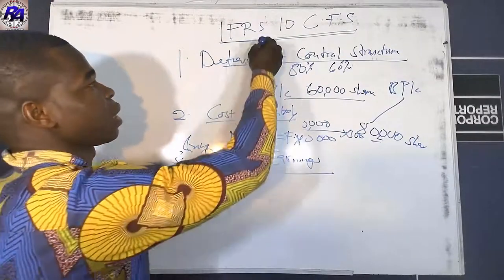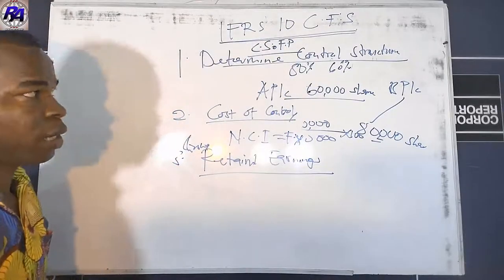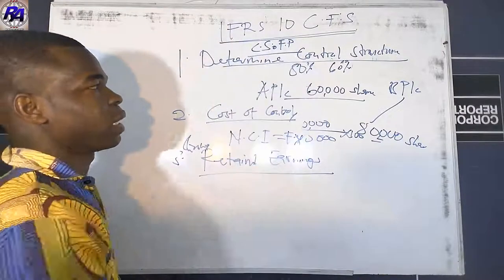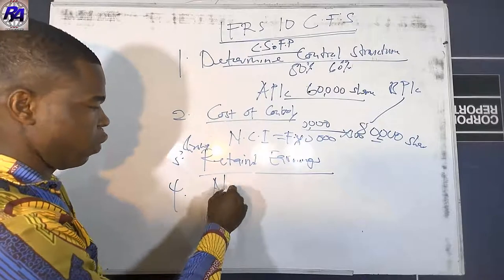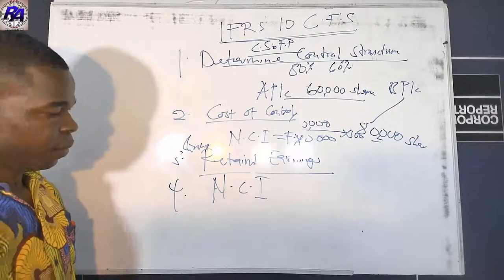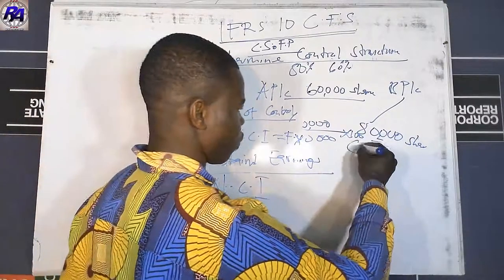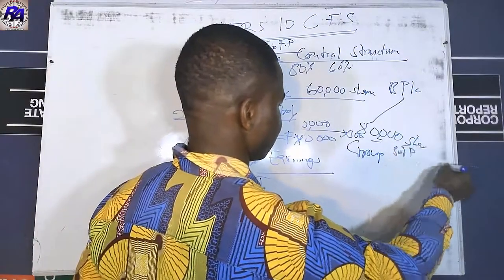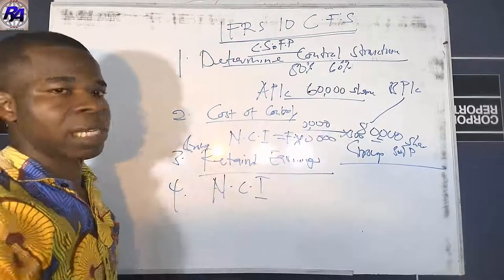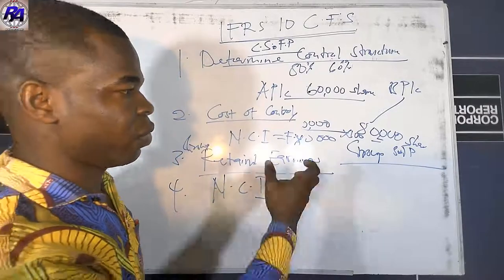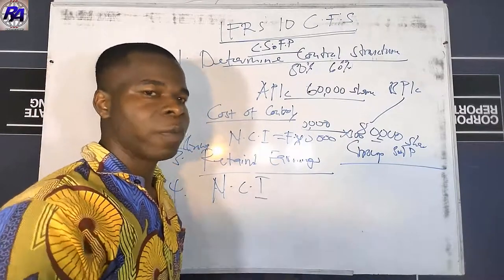To prepare the group statement of financial position, you are given the separate financial statements of both the parent and the subsidiary. You merge them by adding like line items, eliminating intra-group transactions, and accounting for unrealized profits. In the separate financial statement of the parent, there will be 'investment in subsidiary' — this amount must be eliminated in the consolidated statement.